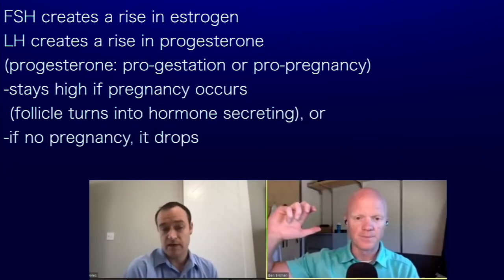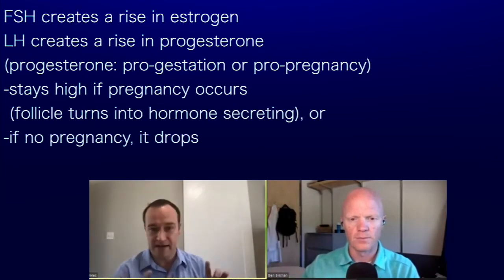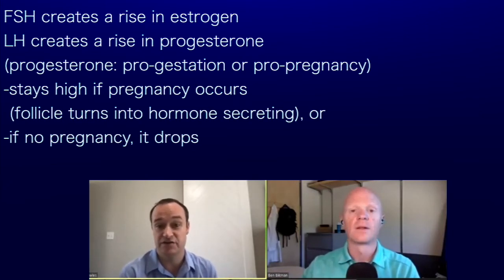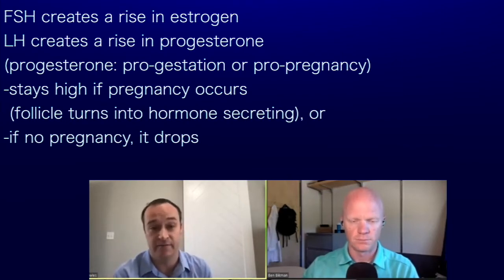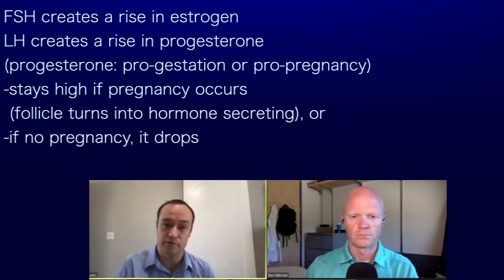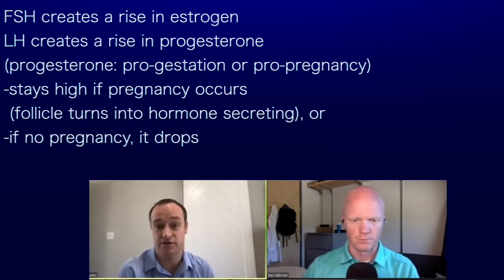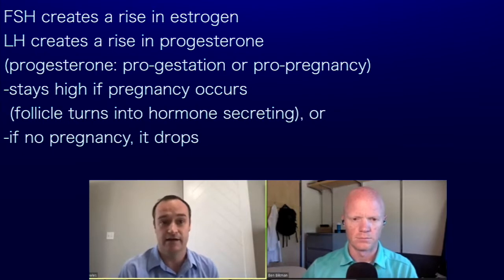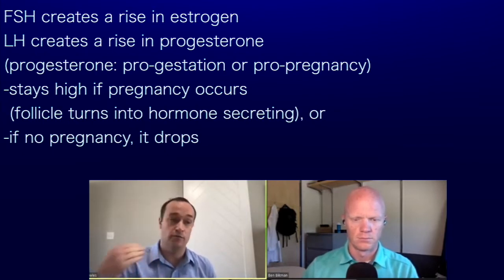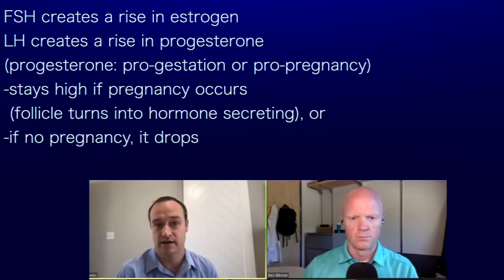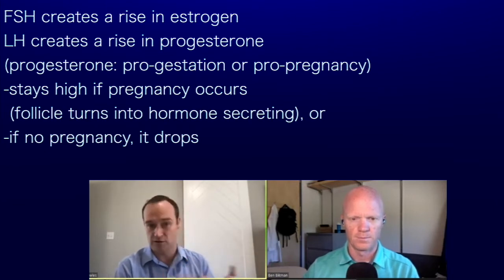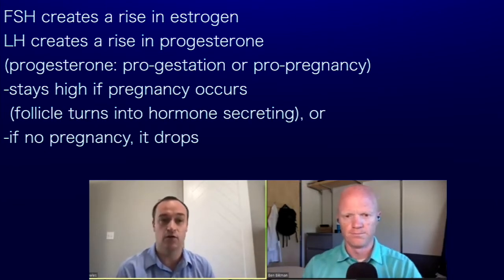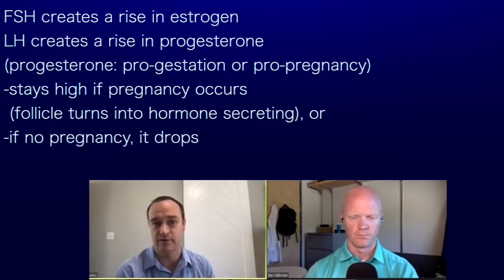The ovary in particular releases a large amount of estrogen and also a large amount of testosterone in the female body as well. Typically, as a basic rule, FSH especially creates an estrogen rise, and then LH will then elicit progesterone to start to rise. And then that progesterone either stays high — meaning pro-gestation or pro-pregnancy — or it drops.